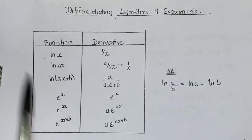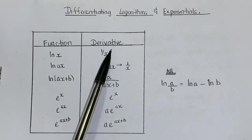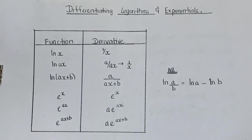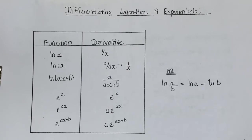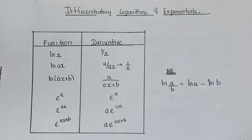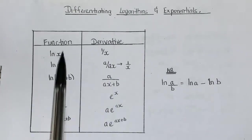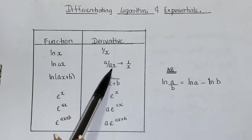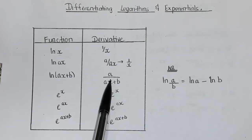Here we have the logarithms at the top. If you are given a function y = ln(x), then its derivative is 1 over x. If you are given the function ln(ax), its derivative is a over x. The pattern is: the coefficient of x over the original. Here the coefficient of x is 1, so it's 1 over x. Here the coefficient of x is a, so it's a over ax — which simplifies to 1 over x. Here the coefficient of x, a, goes over the original ax + b.